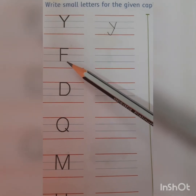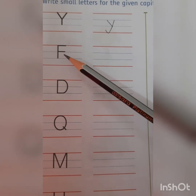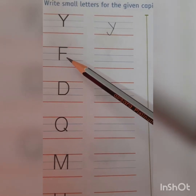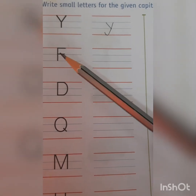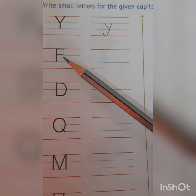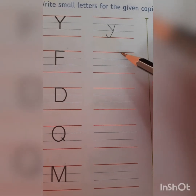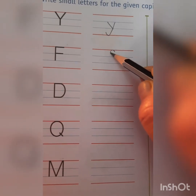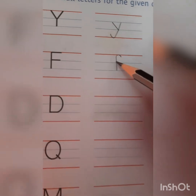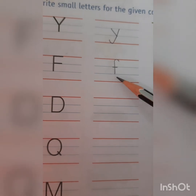Now which letter is this children? This is capital letter F. Aap saasat me sounds ko bhi recall karenge children. F — fish. Now we have to make small f. So small f kaise banana hai? Hum red line se banayenge. Make one standing line like this, and here aap ek choti si sleeping line draw karenge. So this is the formation of small f.